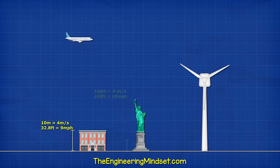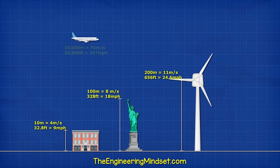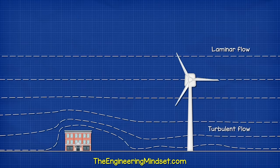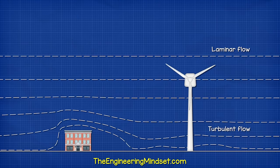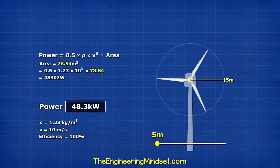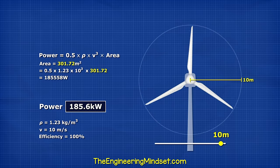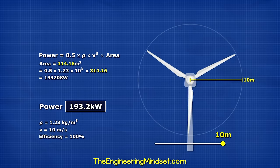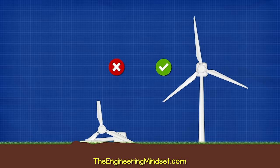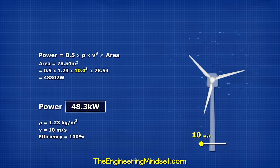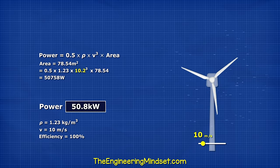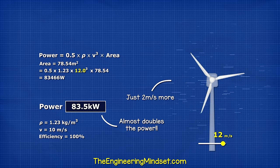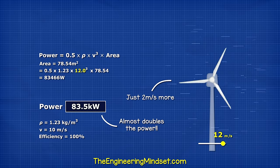The speed of the wind increases the higher we go and it's also less turbulent. The larger the blades, the more wind energy we can capture. Large blades need to be higher off the ground, but the speed of the wind is the largest influencer in power generation.